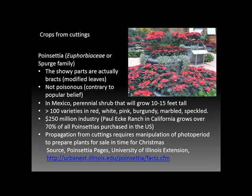A classic example of an important crop produced from cuttings is poinsettia. In the U.S. it's a 250-million-dollar-a-year industry, and one grower in particular had a market share of 70% of all poinsettias purchased in the U.S. One of the important aspects of poinsettia propagation is that the photoperiod needs to be manipulated in order to have quality plants available for Christmas time. A lot of greenhouse space in the U.S. is devoted to propagating this plant in time for Christmas.